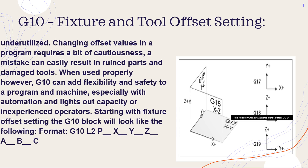Changing offset values in a program requires a bit of cautiousness — a mistake can easily result in ruined parts and damaged tools. When used properly, however, G10 can add flexibility and safety to a program and machine, especially with automation and lights-out capacity or inexperienced operators. Starting with fixture offset setting, the G10 block will look like the following.